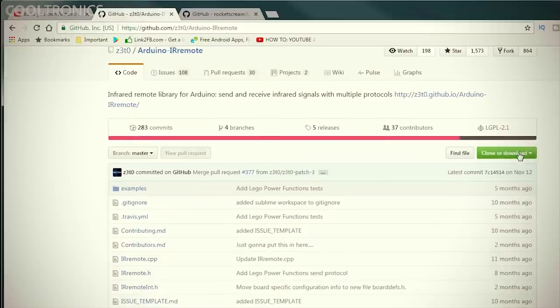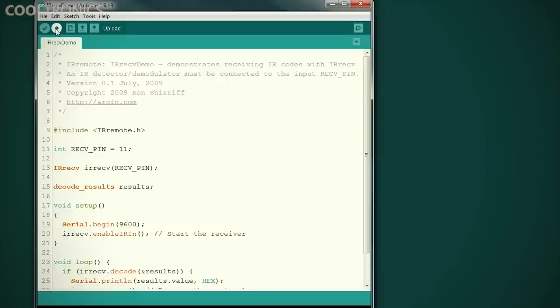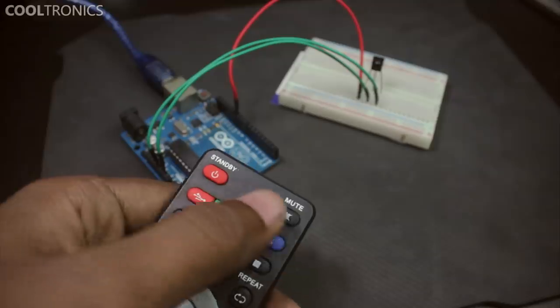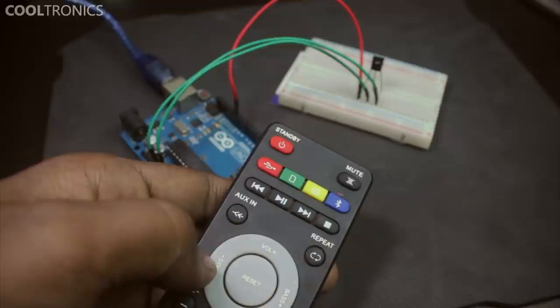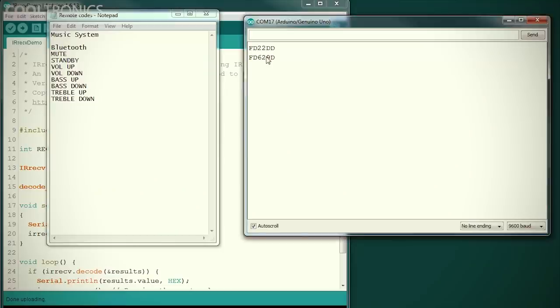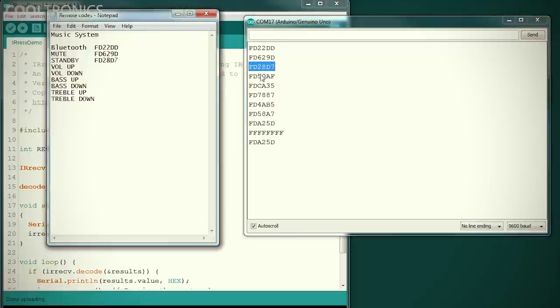Now install the IR remote library and upload the IR Rec demo example sketch to the Arduino board. When we press the button on our remote pointing towards the receiver, we can see its code popping up in the serial monitor. Make a note of that and we're good to go.